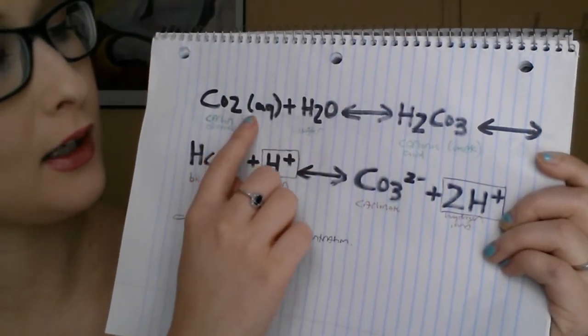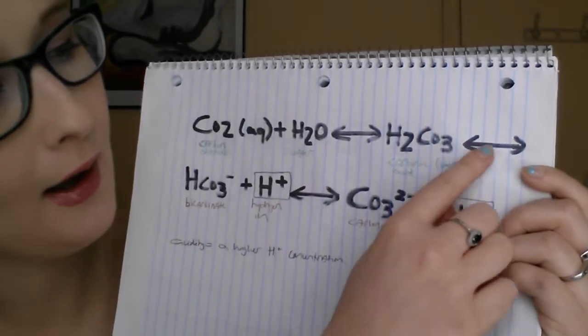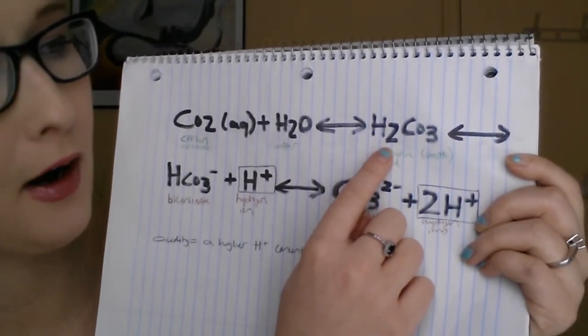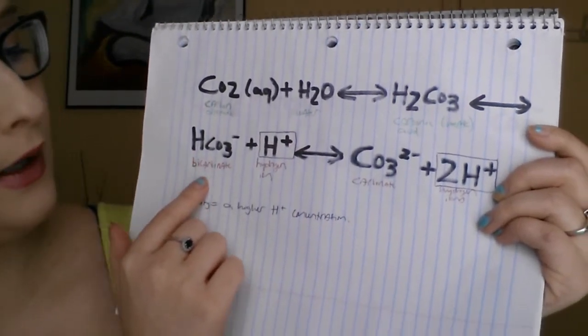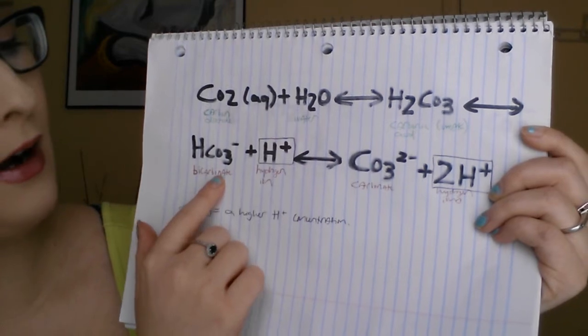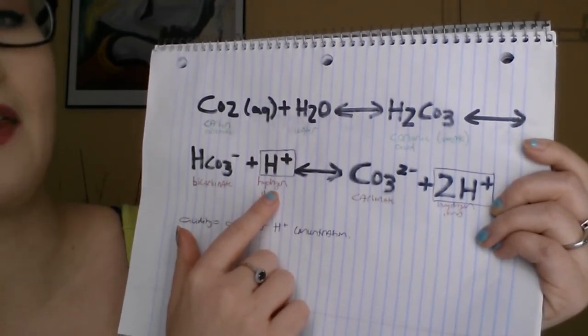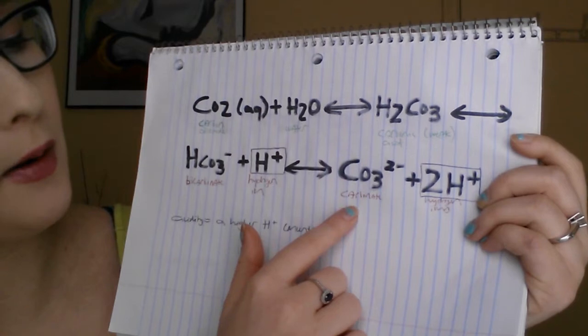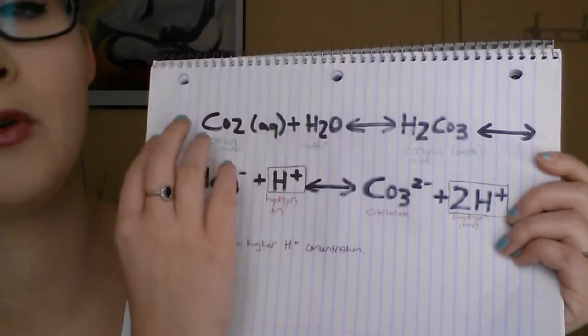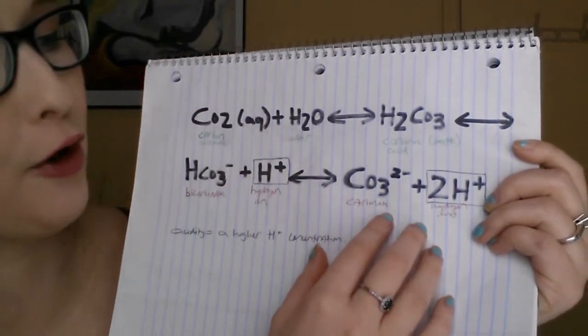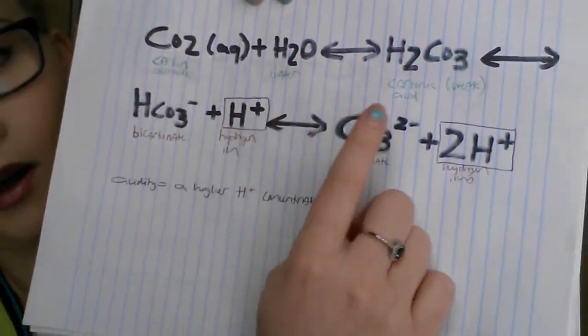So you're going to have the carbon dioxide added to the water, and this creates carbonic acid, which is a weak acid. The equation continues further: you have a breakdown into bicarbonate and a hydrogen ion. You can break that down even further and you end up with carbonate and two hydrogen ions. These are basically ways of rewriting and breaking down the equations further.